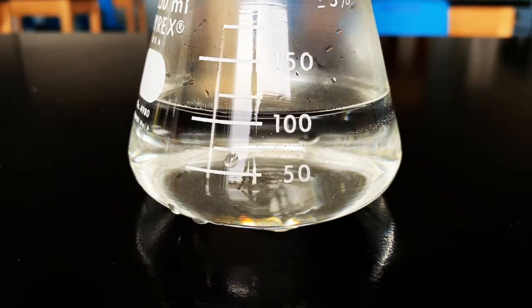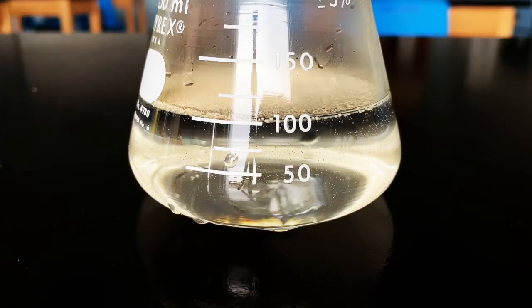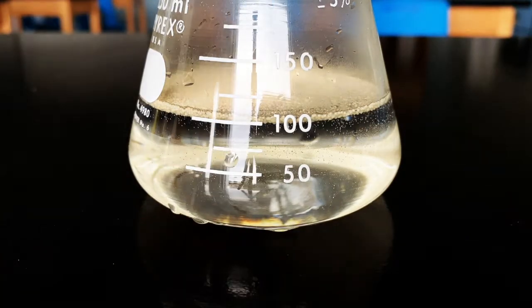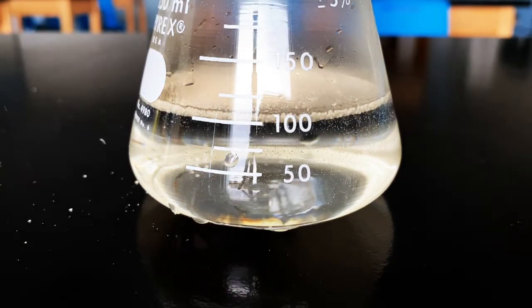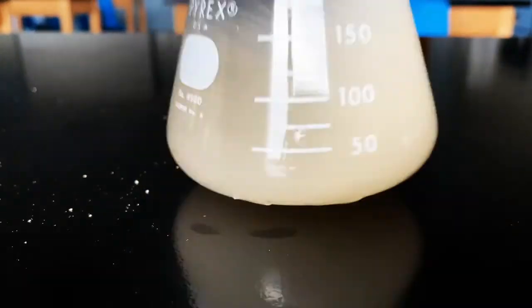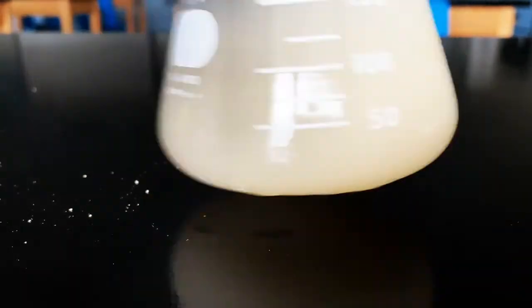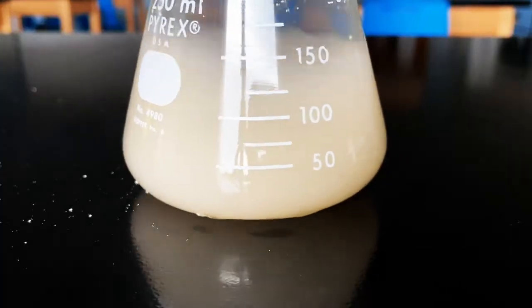First, mix about a half a teaspoon of yeast with about 100 milliliters of warm water in your flask. Stir it really well, then let your yeast sit for a few minutes. Your suspension of yeast should look something like this.